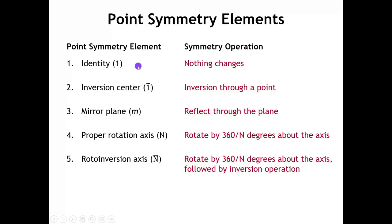Starting at the top, we have the identity symmetry element. What does that do? The identity symmetry element doesn't change the object at all. It's there largely as a requirement of the mathematical properties of a group. So we're not going to worry very much about it, but it is always present.